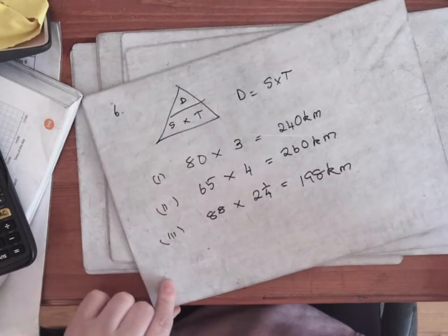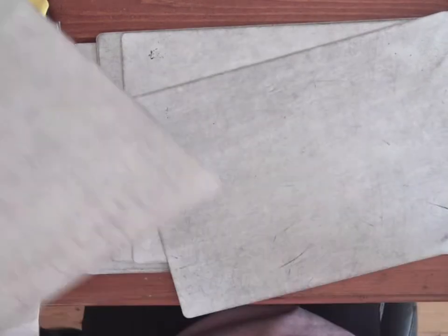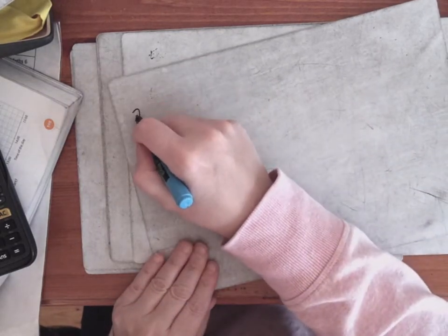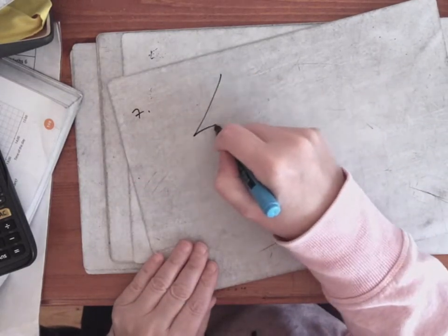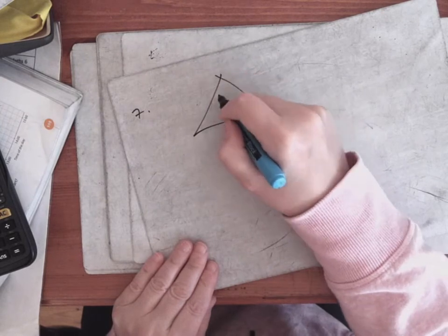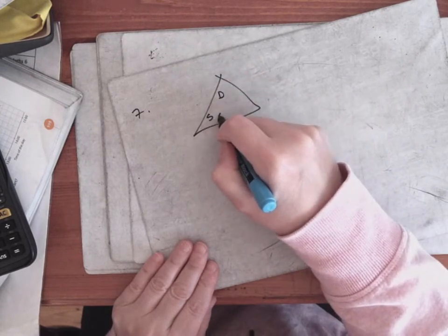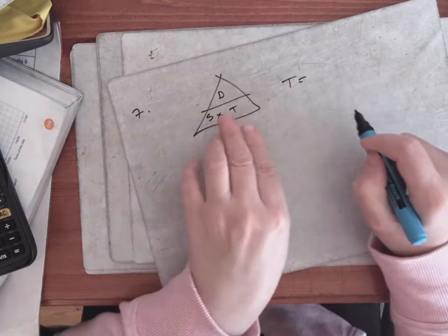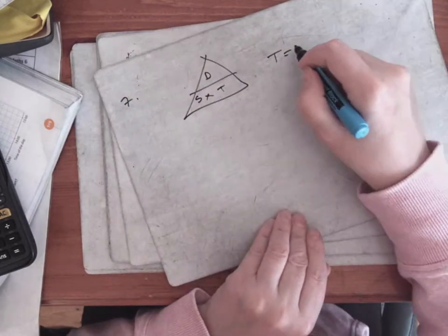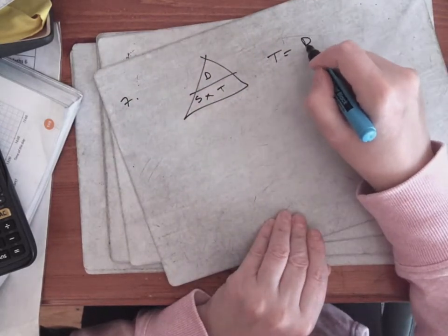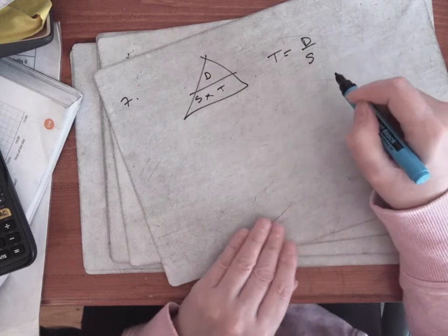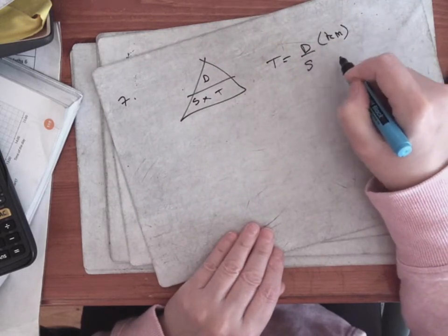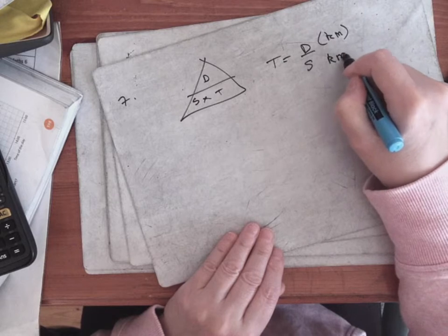That's number six. Number seven: find the time taken. Using that triangle, this time we're looking for time, so the formula we're going to use is: time equals distance over speed. Remember, distance should be in kilometers and speed in kilometers per hour, so your time will be in hours.